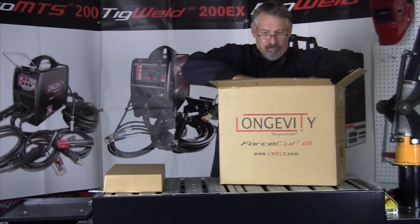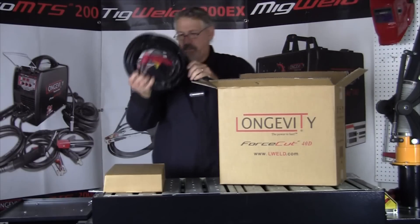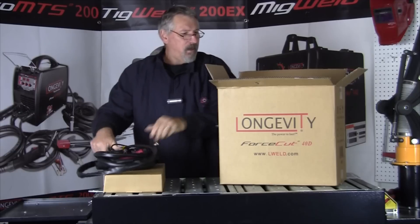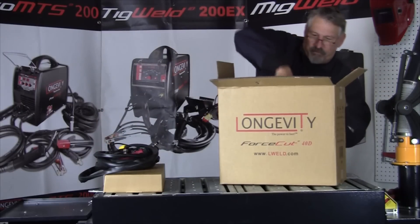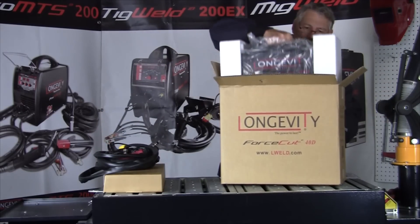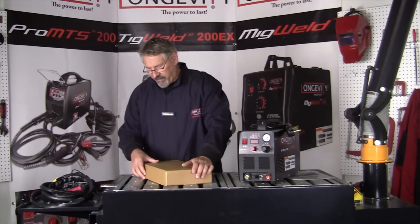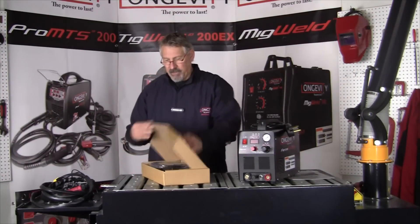Here's our cutting torch. We'll set that down. And here's our machine. There's a smaller box that was inside the packaging. Let's open it up and see what we got inside.